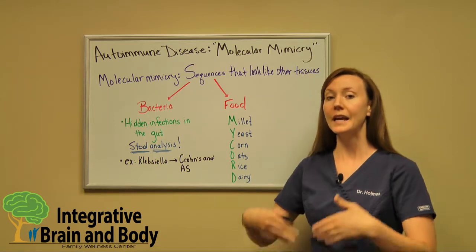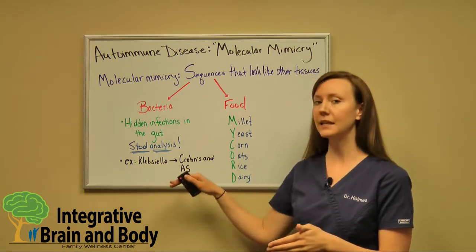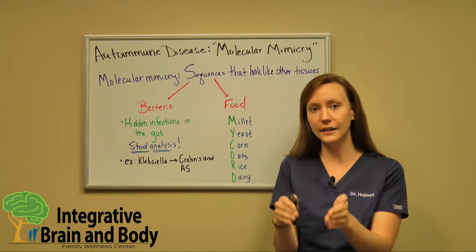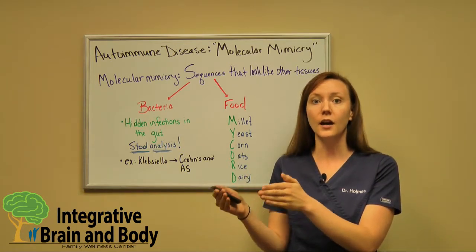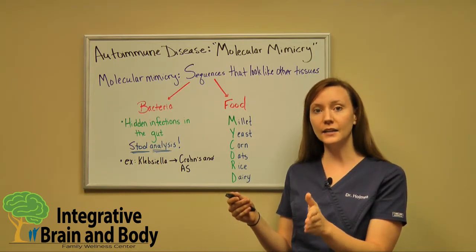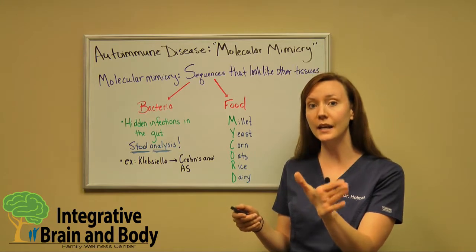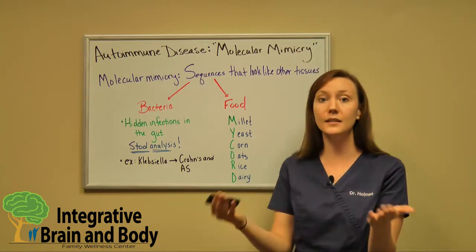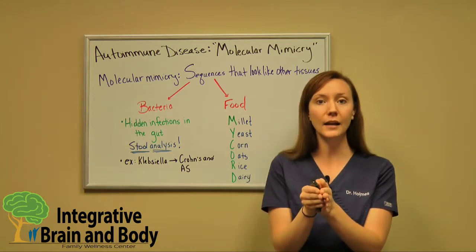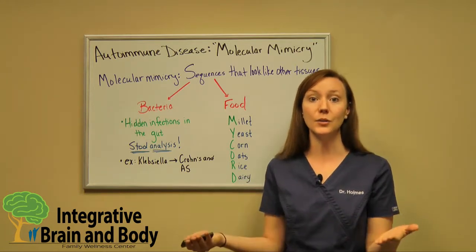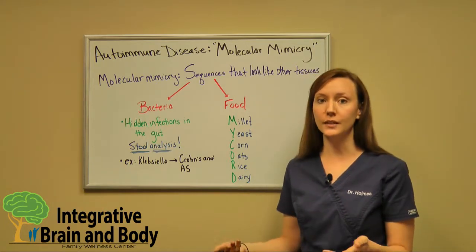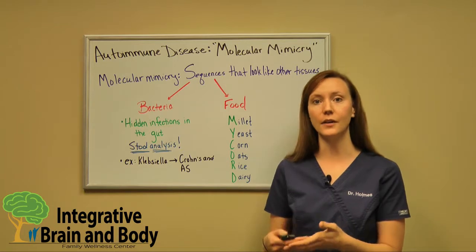So when we start producing antibodies against Klebsiella, but Klebsiella has that sequence that looks a lot like HLA-B27, our immune system might make a mistake. Instead of just attacking Klebsiella, it now thinks HLA-B27 is also a problem, because they look so much alike. Our body makes a mistake, and then we have a full-blown autoimmune disease against HLA-B27. That's where we start seeing things like AS and Crohn's disease — all those HLA-B27 autoimmune conditions.